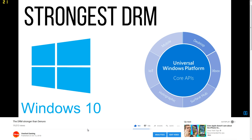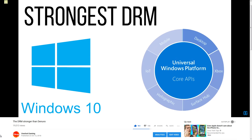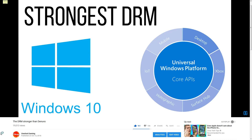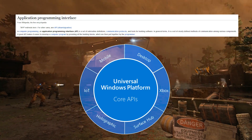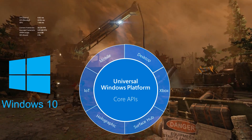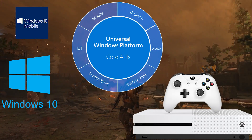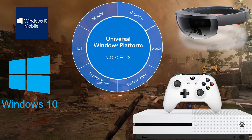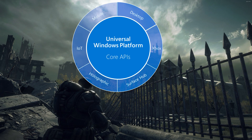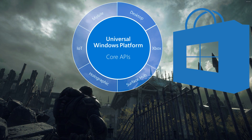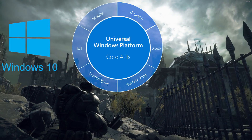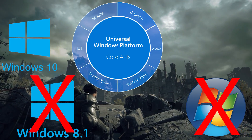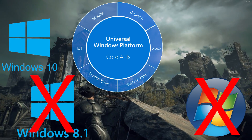UWP — short for Universal Windows Platform — is much more than a mere DRM. It is an application programming interface that can develop apps that run on Windows 10, Windows 10 Mobile, Xbox One, and HoloLens without the need to be rewritten for each. However, the consequence is that Universal Windows apps only install through the Microsoft Store and run only on Windows 10, making them incompatible with earlier Windows operating systems — which makes the name rather ironic.